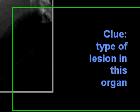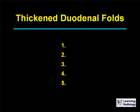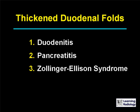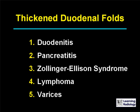The differential is thickened duodenal folds. There are five causes: duodenitis, pancreatitis, Zollinger-Ellison syndrome, lymphoma, and varices.